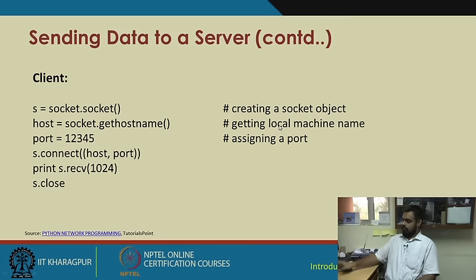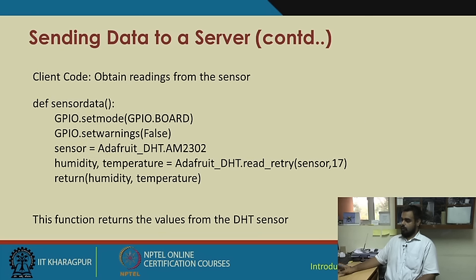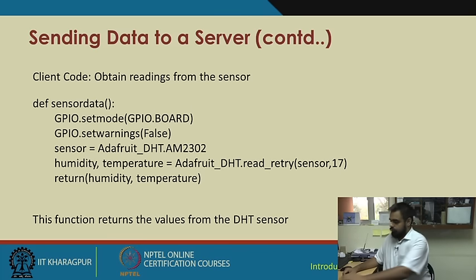For the client side, you again call socket.socket, get the host name, assign the port — this port number must match the server's port number, because the client connects to that particular port. The host name here must be the server's IP address. Using s.connect, you connect to that IP address on that particular port, print that data is being received using s.receive, and eventually close the connection.